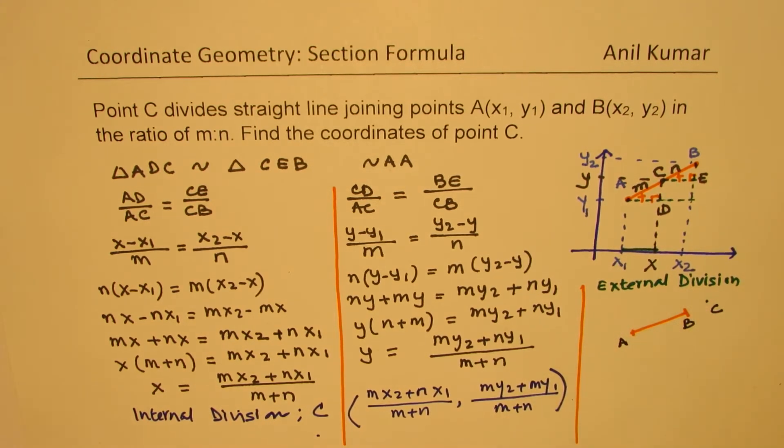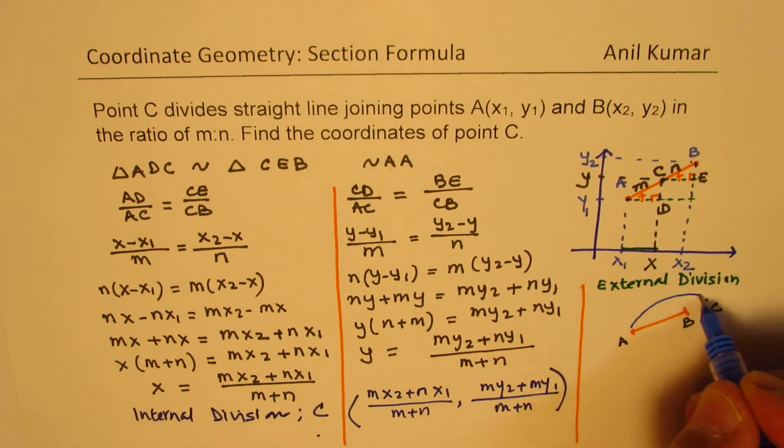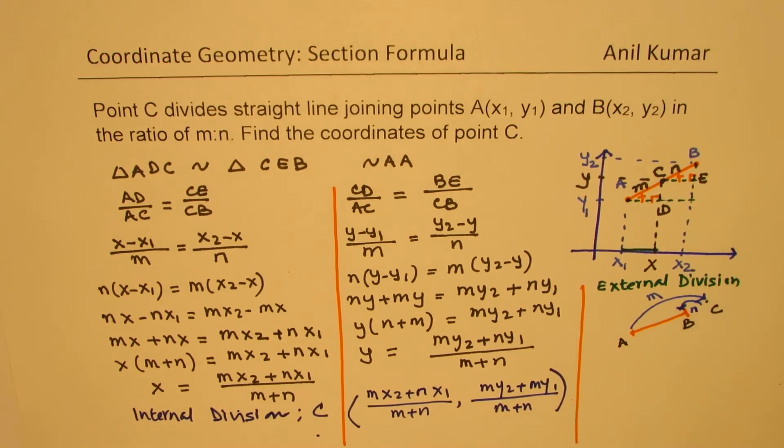So that is external division. So in that case, the ratio m is to n, when we talk about, in that case, m is this. And n is from C to B. Now that is n. So that becomes negative. Do you see that? That becomes negative.